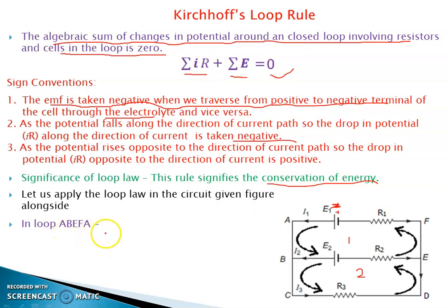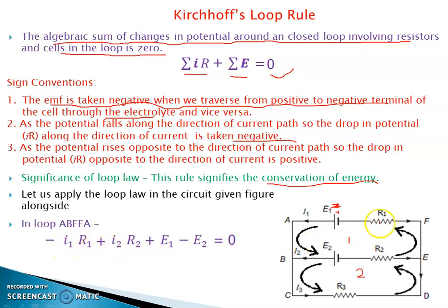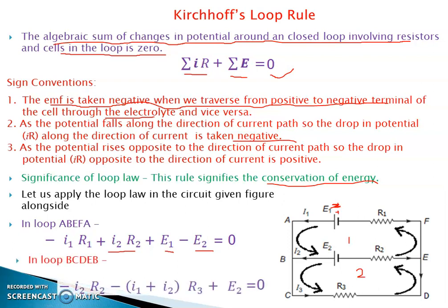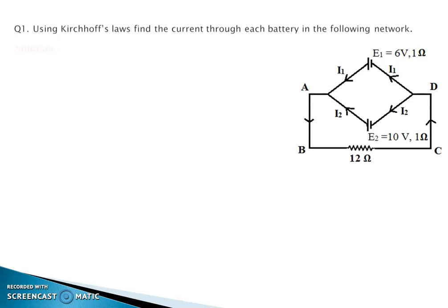Taking the loop ABEFA, we draw the traversal arrow. For a resistance where we move along the direction of current, we take −I1·R1. Where the current direction opposes the arrow, we take it as positive. For EMF sources: E1 in the direction of the arrow is positive, E2 in the opposite direction is negative. Similarly, we apply the loop rule to the second loop. These are Kirchhoff's loop equations, which allow us to solve complicated circuits.